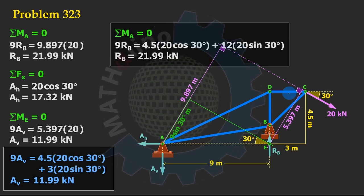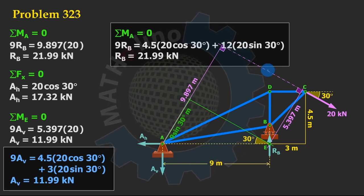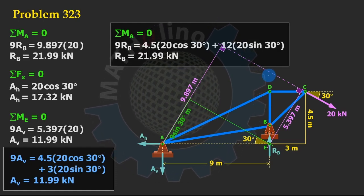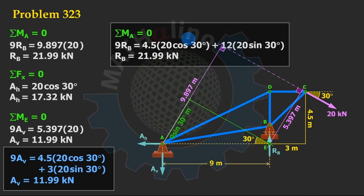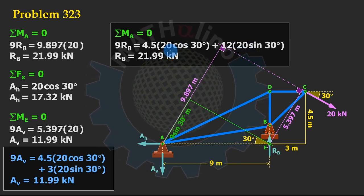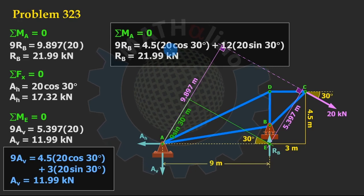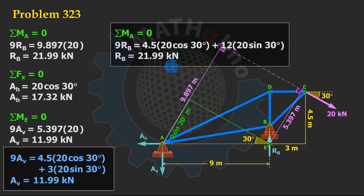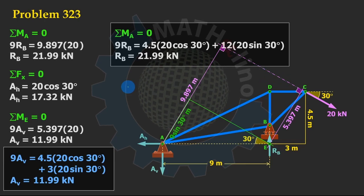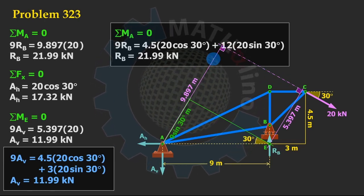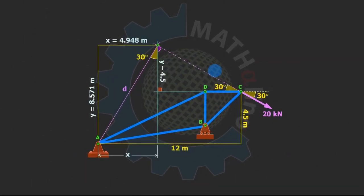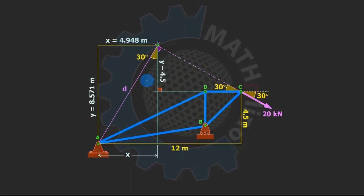Another disadvantage of the second approach using trigonometry and geometry is that it seems there are an infinite number of ways to deal with the problem. Unlike the component method, which guides you to think in a consistent way, this geometric approach has many possible paths. For this problem alone, using geometry or trigonometry, there are many ways to attack it — you can solve for x and y before d, or approach it differently.